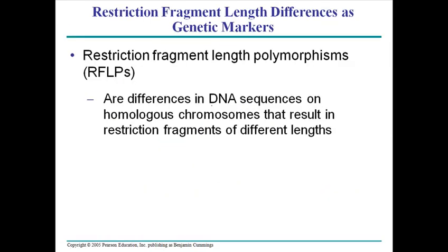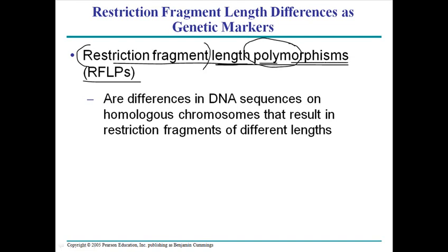Let's talk about RFLP, or Restriction Fragment Length Polymorphisms. It's a mouthful of a name. 'Restriction fragment' means the fragment generated by the action of a restriction enzyme. 'Length' means the length in nucleotides. 'Polymorphisms' means the morphology of the DNA comes from different sources — so it refers to different morphological lengths of restriction fragments.